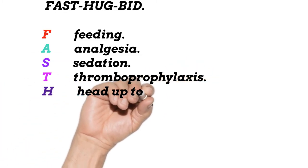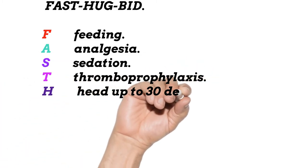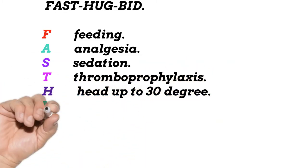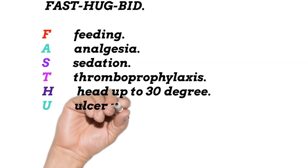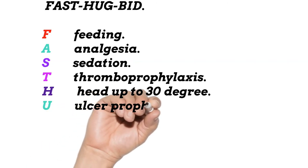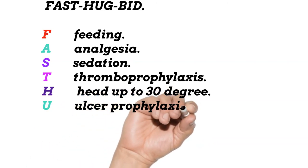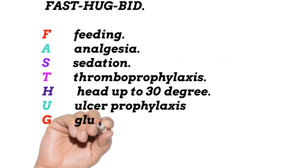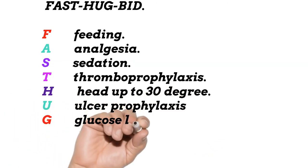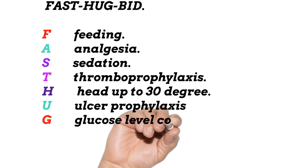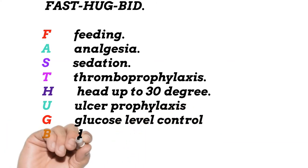H — Head up to 30 degrees. U — Ulcer prophylaxis. G — Glucose level control.